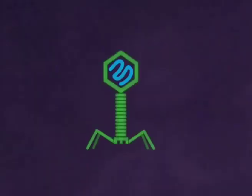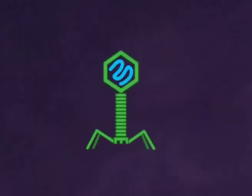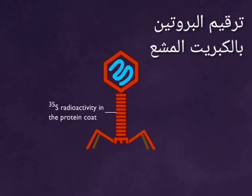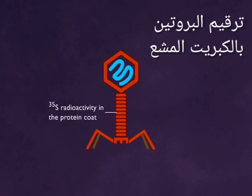In the first part of the experiment, phage were produced in a medium containing S35 radioactively labeled amino acids. This resulted in a phage population with S35 labeled proteins, but no radioactive label in the DNA.